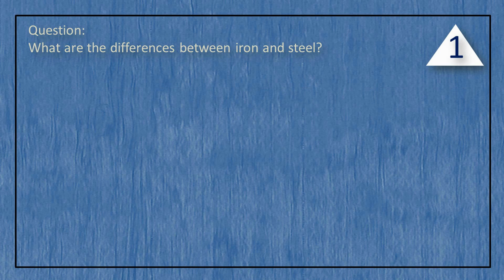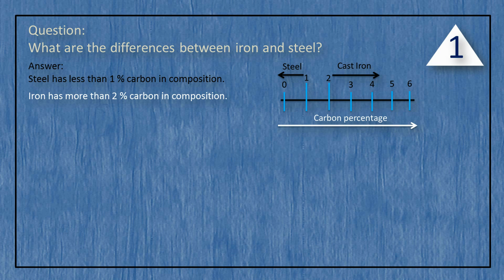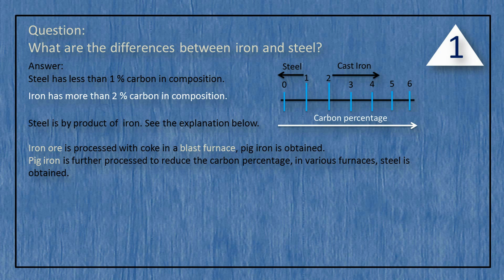What are the differences between iron and steel? Steel has less than 1% carbon in composition, whereas iron has more than 2% carbon in composition. Steel is a by-product of iron. Iron ore is processed in a blast furnace and pig iron is obtained. Pig iron is further processed to reduce the carbon percentage in various furnaces, and steel is obtained.